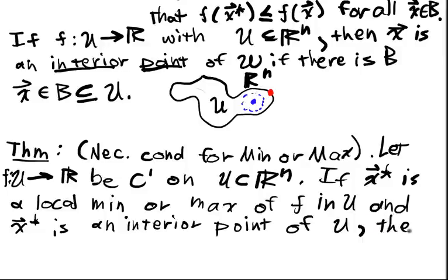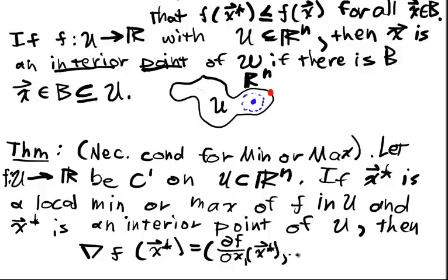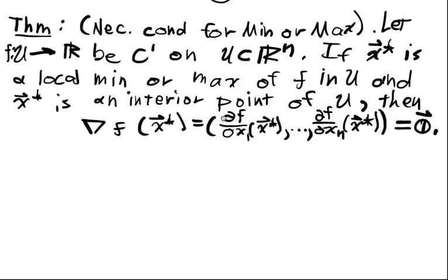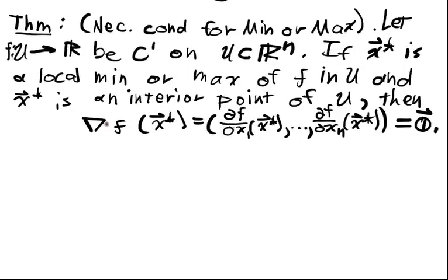then the gradient has to vanish at that point. That's equal to the zero vector. So that's a necessary condition.